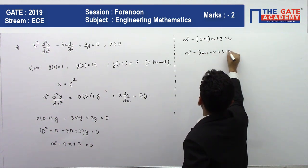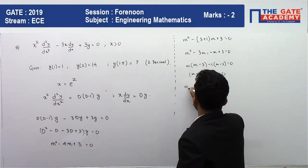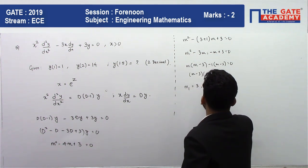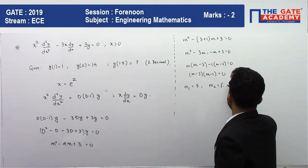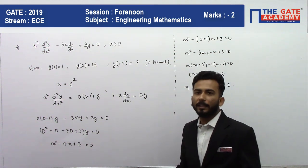I will be getting the two values: m₁ = 3 and m₂ = 1.